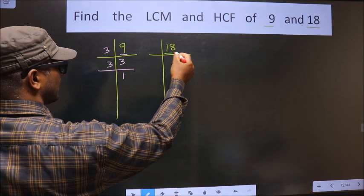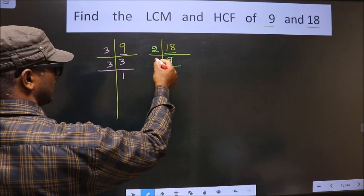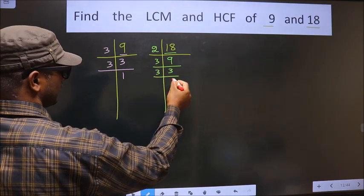Now here we have 18. 18 is 2 times 9. Now 9 is 3 times 3. Now 3 is a prime number, so we take 3, and 1 times 3 equals 3.